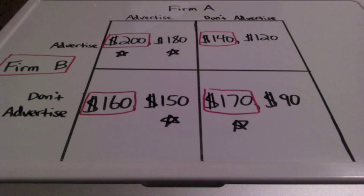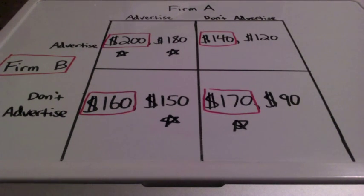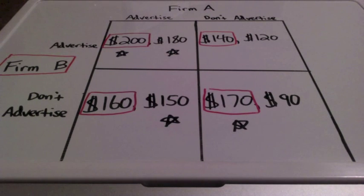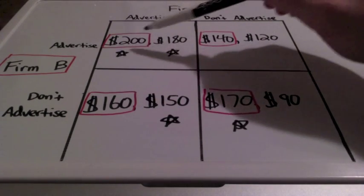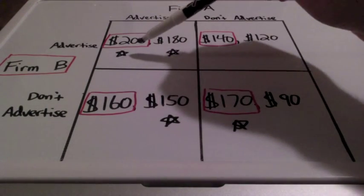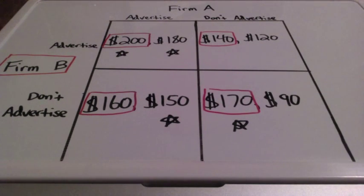Is there a dominant strategy for firm B? There is no dominant strategy for firm B because in one situation they are going to advertise, and in another situation they are going to choose not to advertise. Is there a dominant strategy for firm A? The dominant strategy for firm A is to advertise — they are going to advertise no matter what. As you can see, there are two stars in this box here, meaning firm A is advertising and so is firm B. So what will both these firms do? They will choose to advertise.